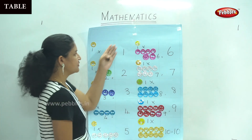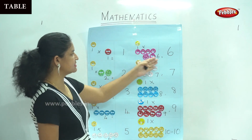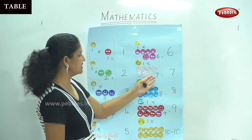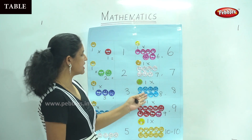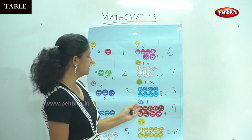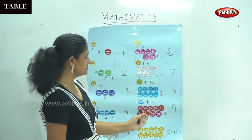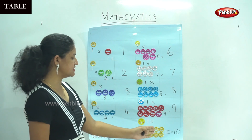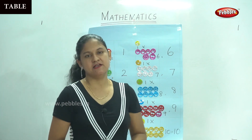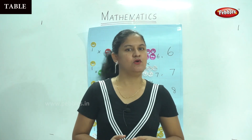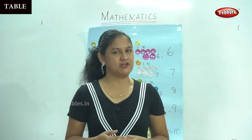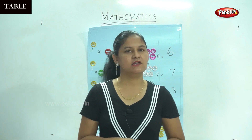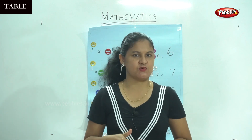So we have 1 times 6 is number 6, 1 times 7 is number 7, 1 times 8 is number 8, 1 times 9 is number 9, and 1 times 10 is number 10. So this is our Table 1. I hope you understood Table 1 with the activity as well.